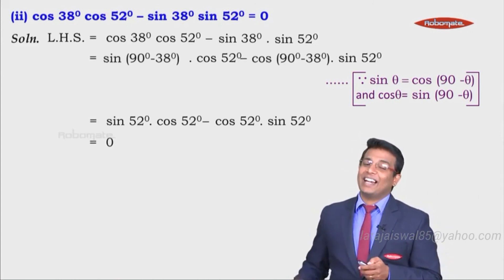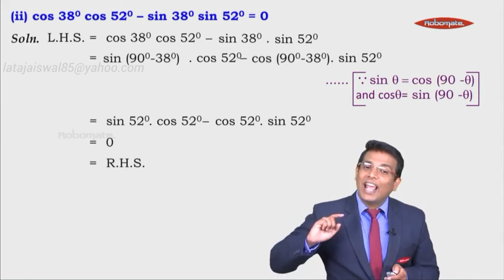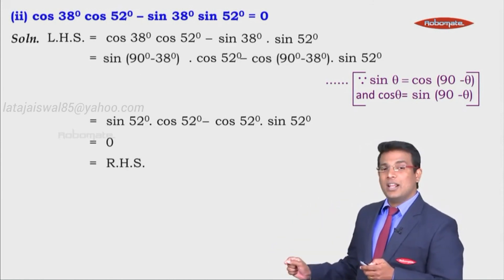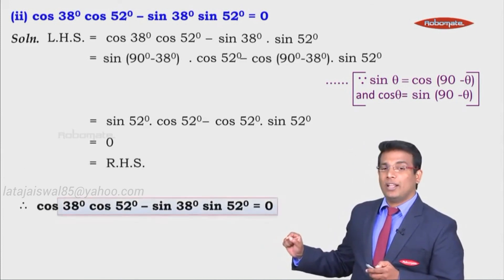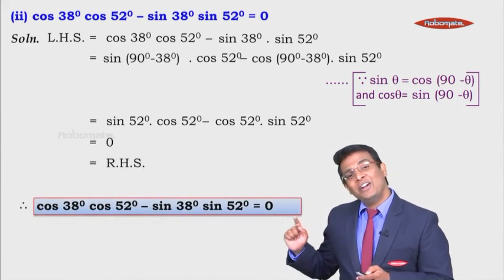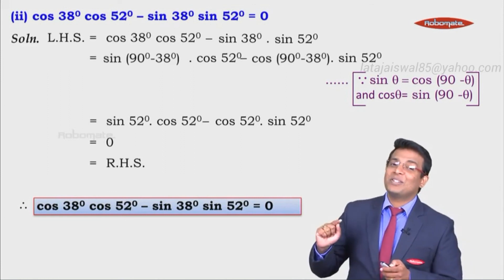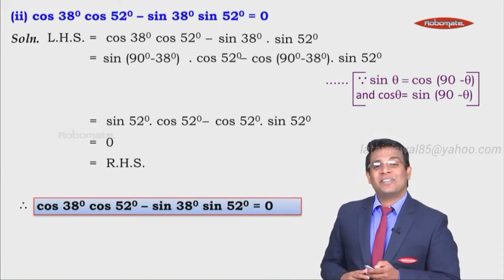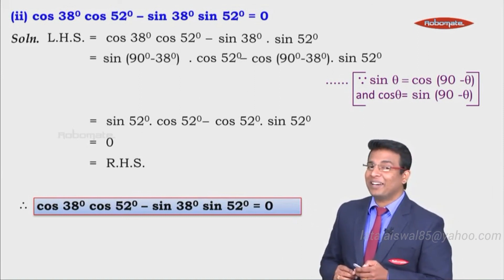That means left hand side is equal to right hand side. Hence we can say that cos of 38 degrees into cos of 52 degrees minus sin of 38 degrees into sin of 52 degrees is equal to 0, and that is proved. Left hand side equals right hand side. Wasn't that easy — simple!